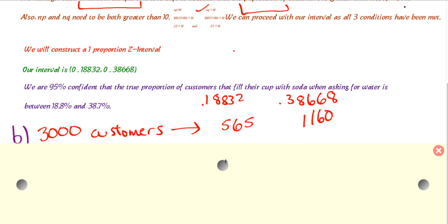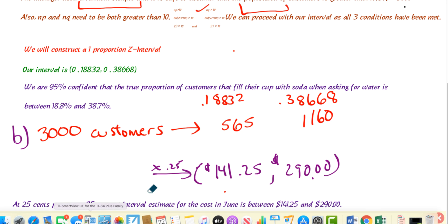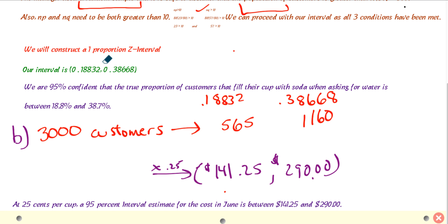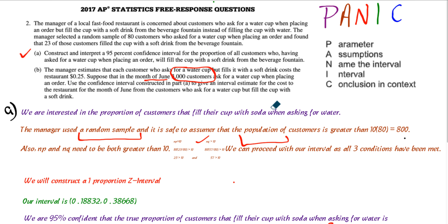And then, it says that for each customer, the company loses 25 cents. So, that's going to give us $141 to $290. So, we're going to make a statement in context because this will be an AP question. At 25 cents per cup, a 95% interval estimate for the cost in June is between $141.25 and $290. That is the entire question right there. AP Stats, free response, 2017 number two. Good luck.